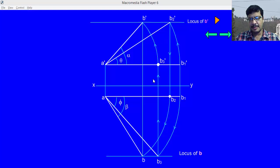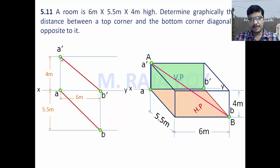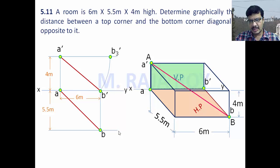Now observe our problem. I will start from the front view. Taking A dash as center and A dash B dash as radius, I draw an arc to get B three dash. From B three dash, I draw a projector onto the locus of top views — that means up to the level of B — and here I get B three. The line joining A and B three is the true length.